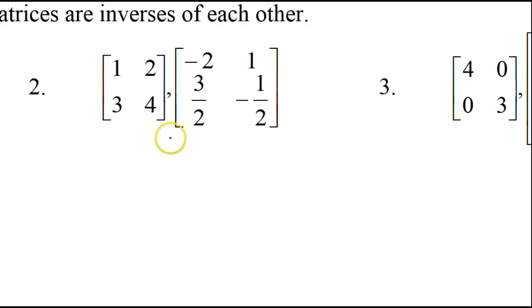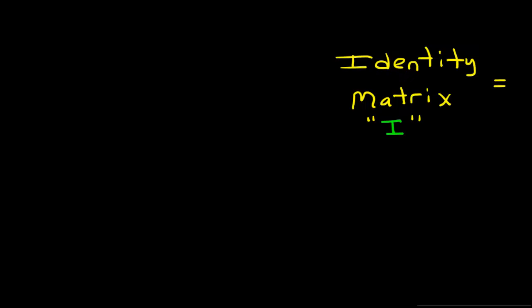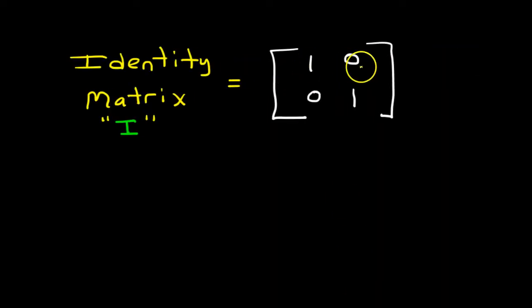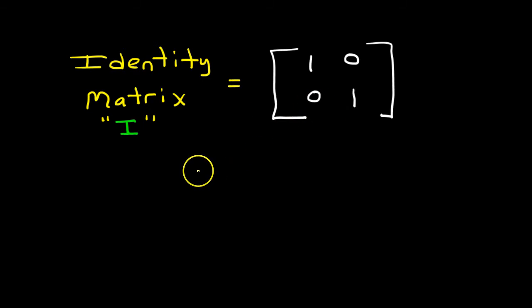Let's do another example. We're just going to multiply these together and see if we get the identity matrix, 1, 0, 0, 1. If we do, then they are inverses. If we don't, they are not.